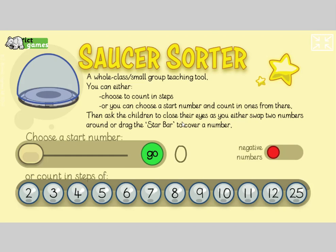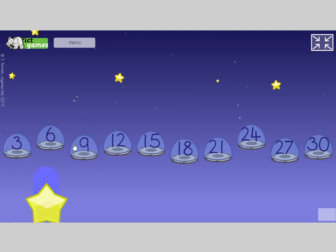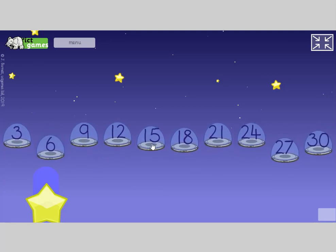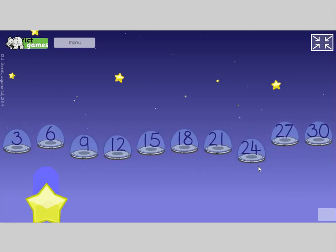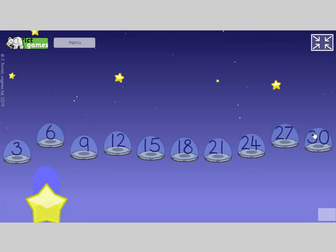We need to be able to count in threes in year two. And it's good for year one to join in. Here we go, let's count in threes. Three, six, nine, twelve, fifteen, eighteen, twenty-one, twenty-four, twenty-seven, thirty.